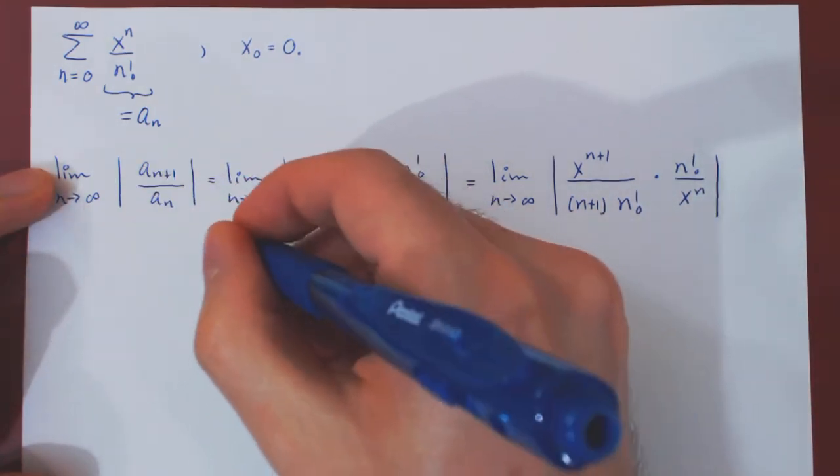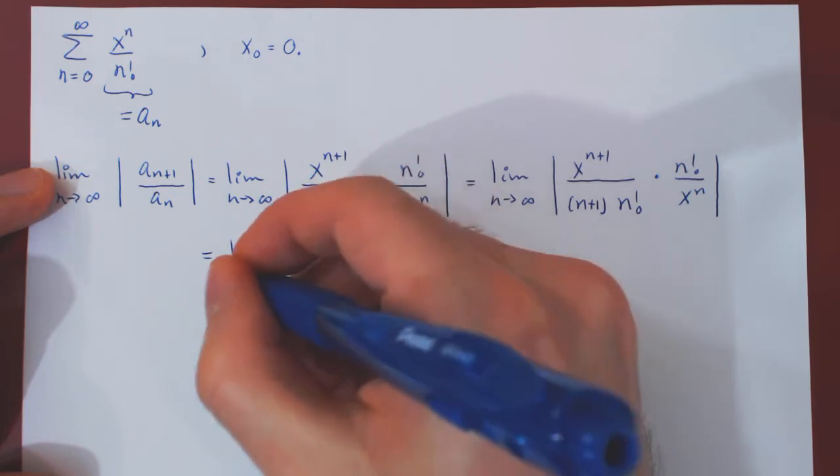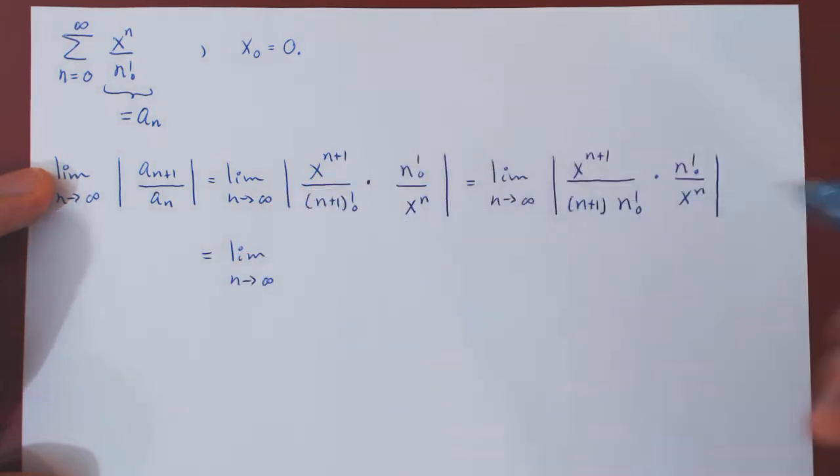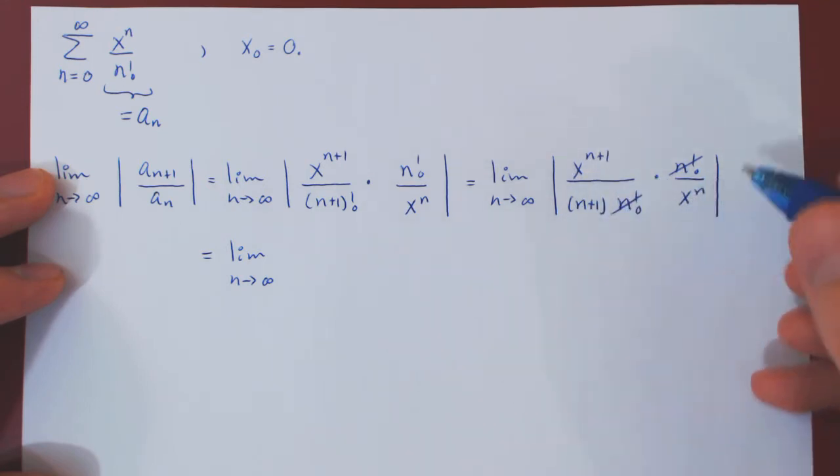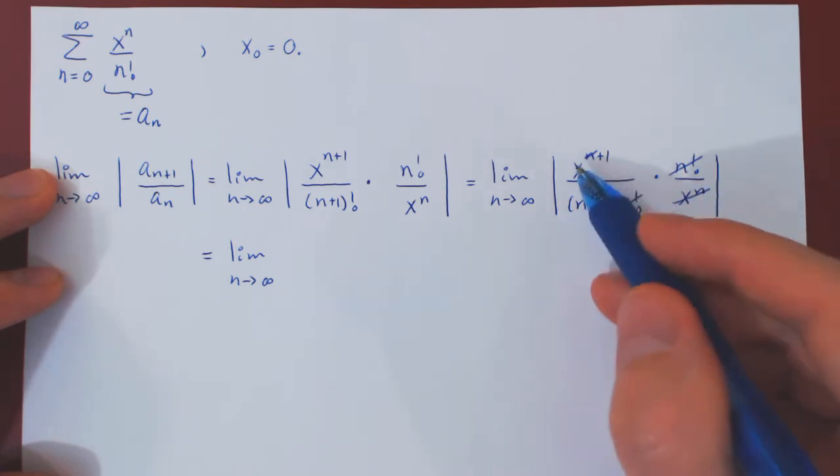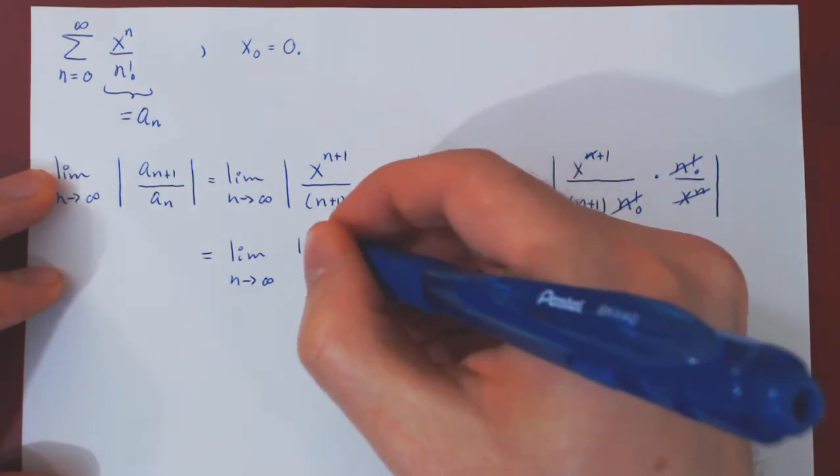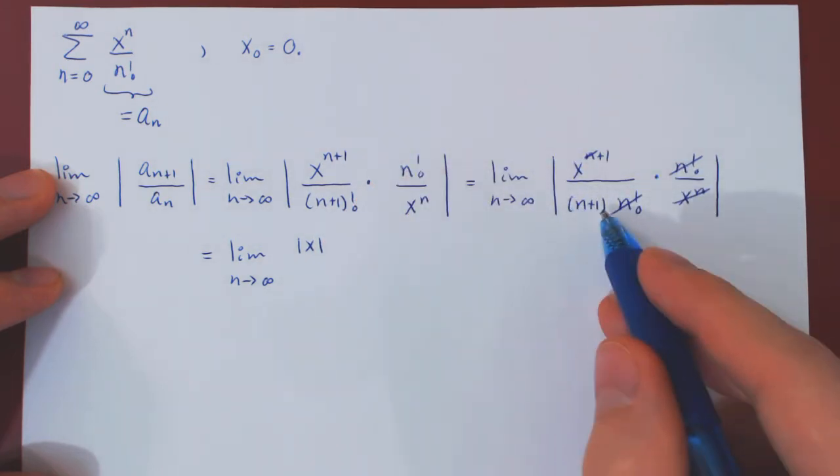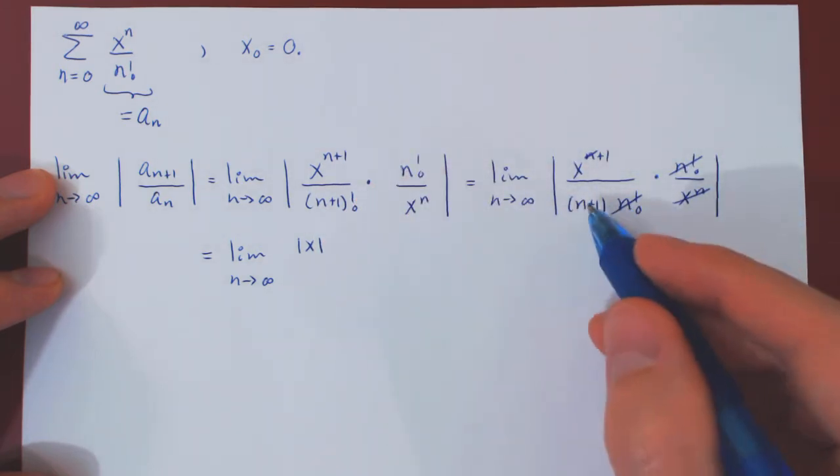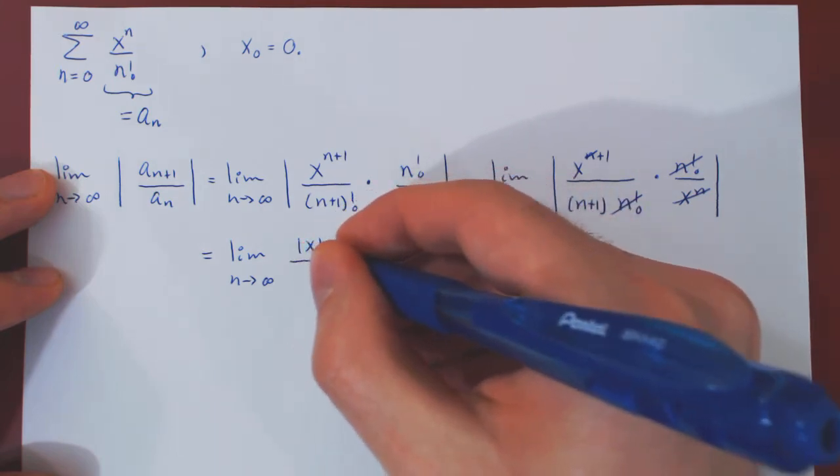And so what we have now will be a very simple limit. n factorial over itself cancels. x^(n+1) over x^n is simply x. So we're left with x in absolute value, as x could be negative, over (n+1). We do not need the absolute value in n+1, as it is clearly positive.